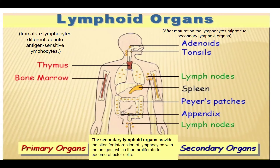The secondary lymphoid organs are numerous: adenoids and tonsils near the salivary area, lymph nodes, the spleen located very close to the stomach, Peyer's patches in the small intestine in the villi region, appendix, and various lymph nodes at different corners of the body.